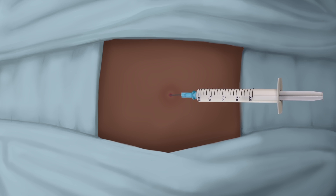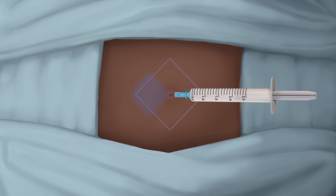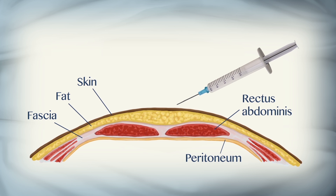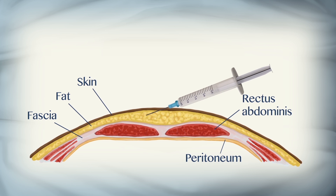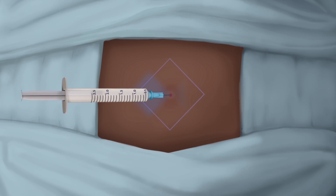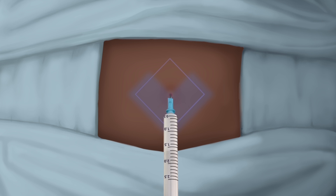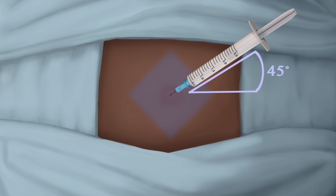Inject local anesthetic at a parallel angle just under the skin and raise a small wheal. Aspirate first to avoid vessels, then advance the needle to inject layer by layer in a diamond shape. Repeat this diamond shape with the needle at a 45-degree angle.